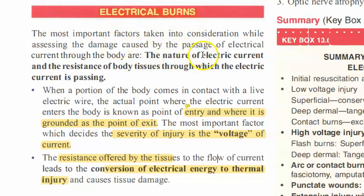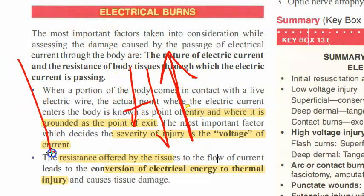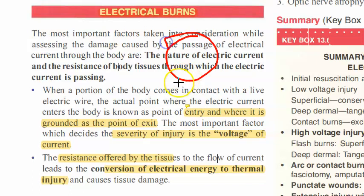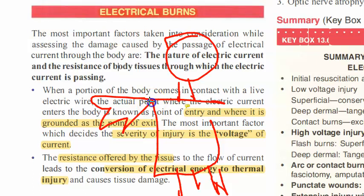Basically, what happens when you touch electricity is that the resistance of our tissues causes heat to be produced, and this heat causes the damage. So when you come in contact with electricity, the heat is what damages the tissue. Based on the voltage you are touching, the amount of damage depends on the voltage — high voltage means more heat and more damage.